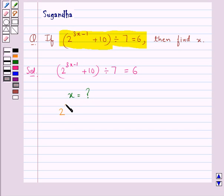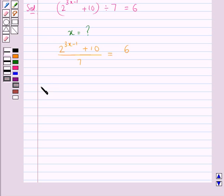Consider 2 to the power 3x minus 1 plus 10 upon 7 is equal to 6. This gives us 2 to the power 3x minus 1 plus 10 is equal to 7 into 6. That is, we get 2 to the power 3x minus 1 plus 10 is equal to 42.